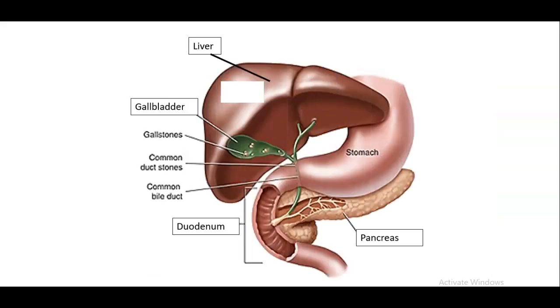And then this image here, so we've got the liver, which is one of the largest organs in the body, and the liver produces bile. And then here the gallbladder stores the bile from the liver.